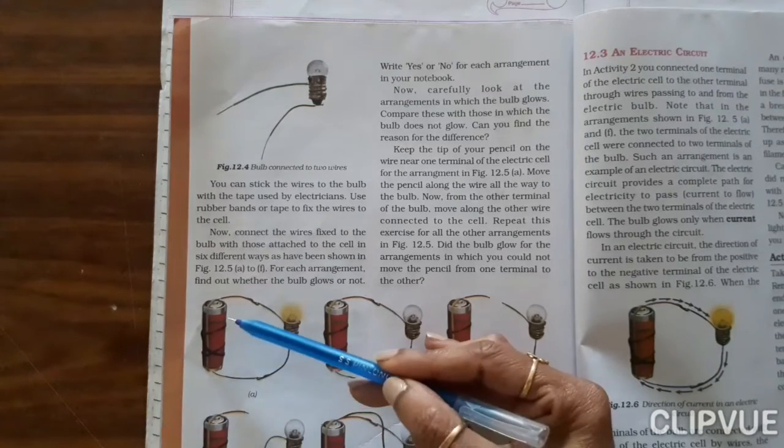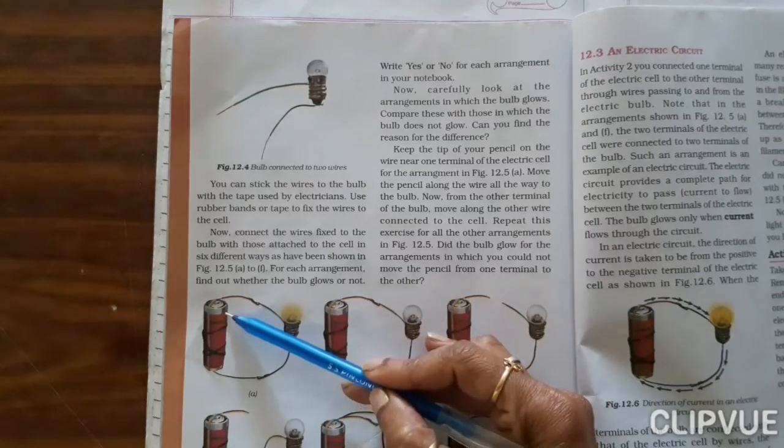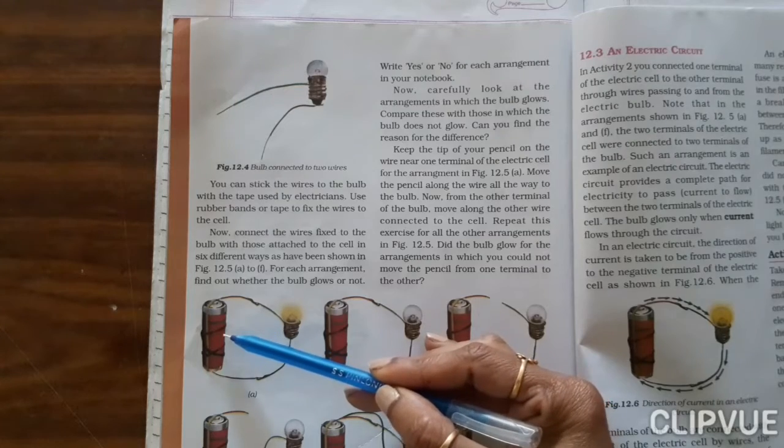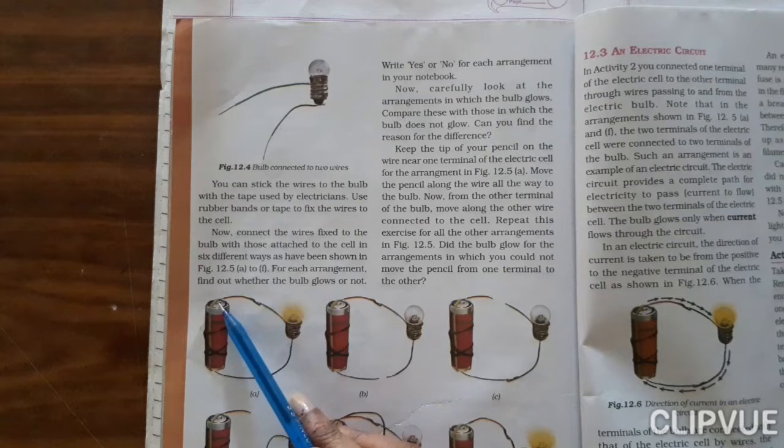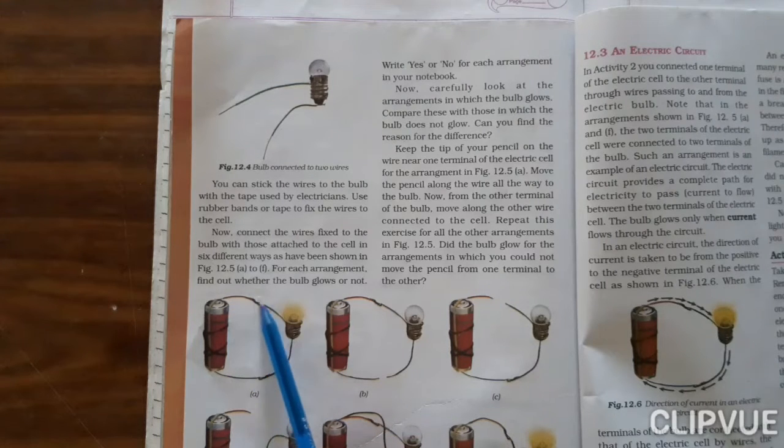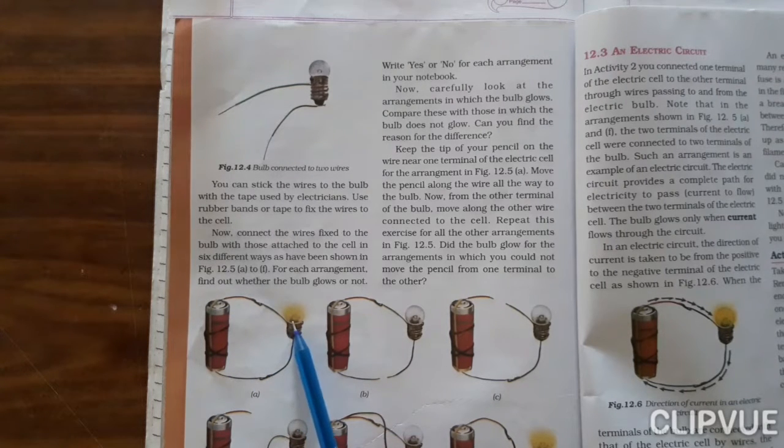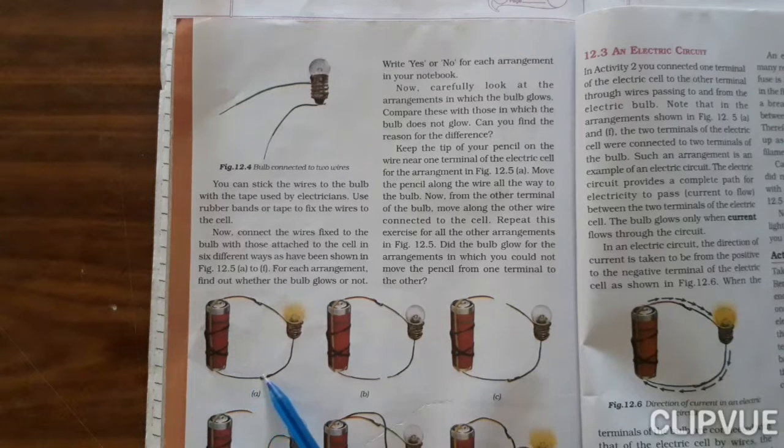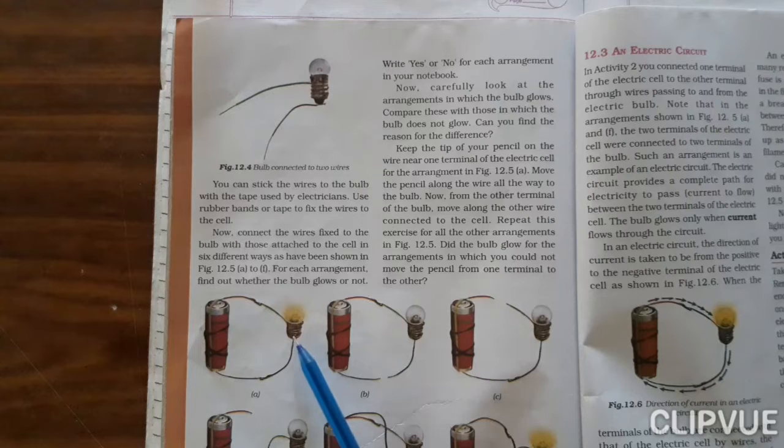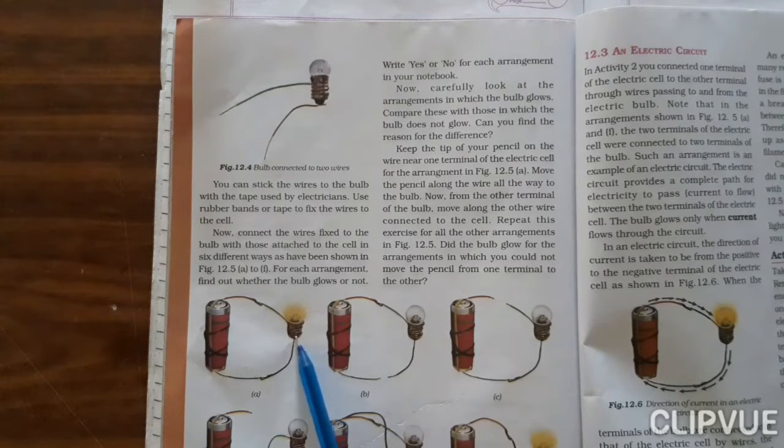And we have already learned that the cell is having chemicals which will start reacting and current will start flowing. So this positive terminal of the cell should be connected with the positive terminal of the bulb, and the negative terminal of the cell should be connected to the negative terminal of the bulb.